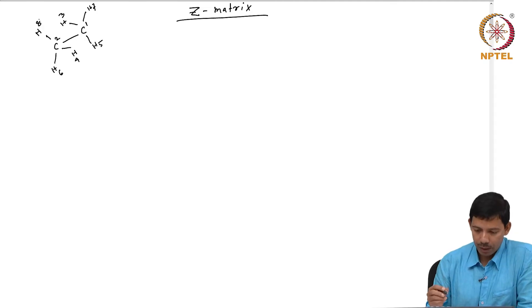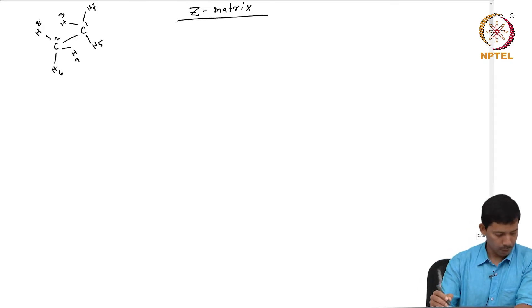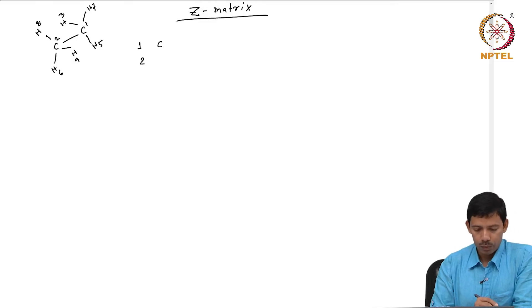To write the Z matrix, first I write my number 1 atom is carbon. Number 2 is also a carbon. Now number 2 atom is connected to number 1 atom, so 2 is connected to number 1 atom by a bond distance of 1.54 angstrom.